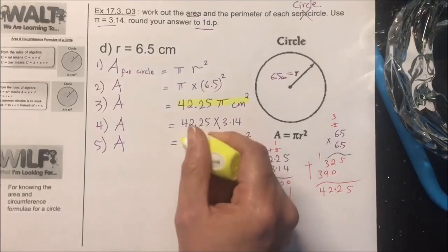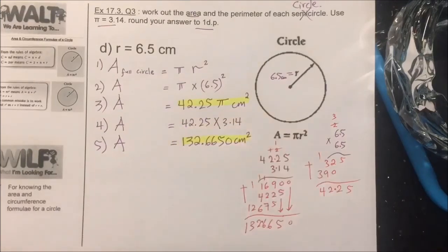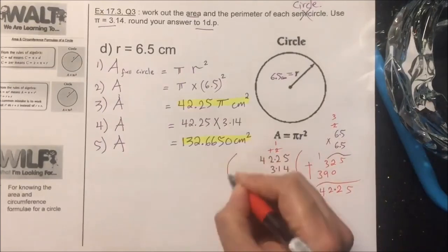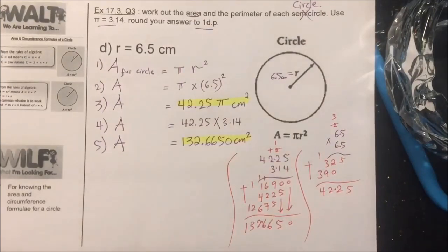So this is the area of the circle in terms of pi and this is the area of the circle when we substitute pi as 3.14. I hope this is clear and thank you so much for watching.